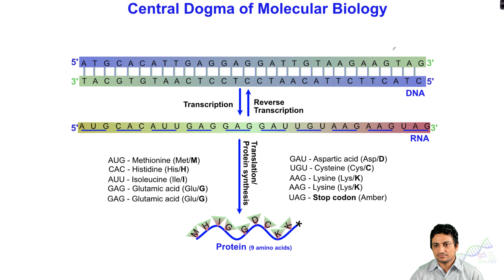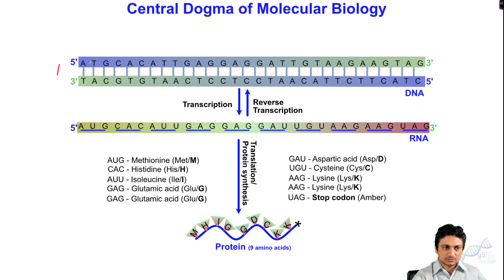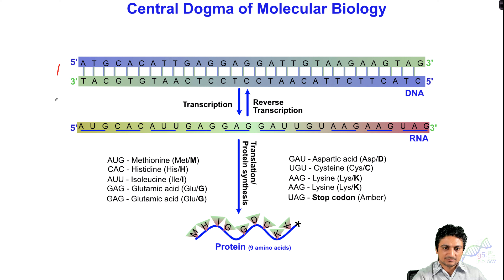The first step is DNA replication. During this process, DNA is replicated into another strand of DNA. This is possible due to the DNA polymerase enzyme. The second step is the flow of information from DNA to RNA.